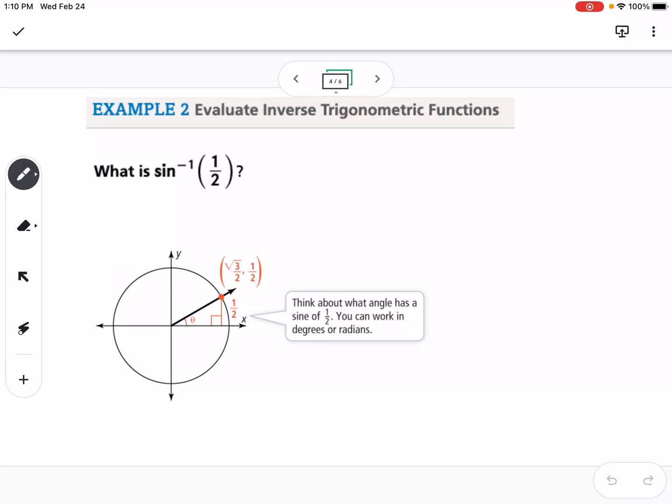So then getting into how do we find the inverse of a trig function. So it's saying what is the inverse sine of a half? So what that's asking us, what we think in our head, is at what angle does, do we have a sine, so a y value, so we know sine is y, of one-half.